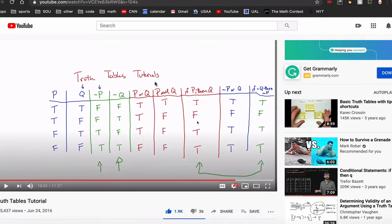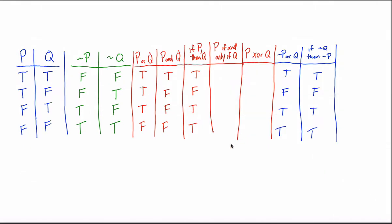Here's part two for truth tables tutorials. I made the first truth table video about four years ago and got some questions on it, so I figured I'd make another video to answer those questions. I'm actually going to make another one after this, but for this video I want to clear up questions from the first video, show some different ways these questions can be asked, and really make you an expert at truth tables.